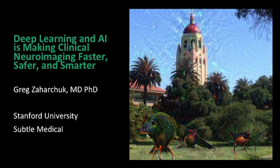We'd like to welcome you to today's webinar: How Deep Learning and AI Are Making Clinical Neuroimaging Faster, Safer, and Smarter. Our discussion will be around 20 minutes long, and then we'll open it up for about 10 minutes of live Q&A. Everybody will be muted during the discussion, so be sure to write down your questions or submit them as we go along so that we can address them during the Q&A.